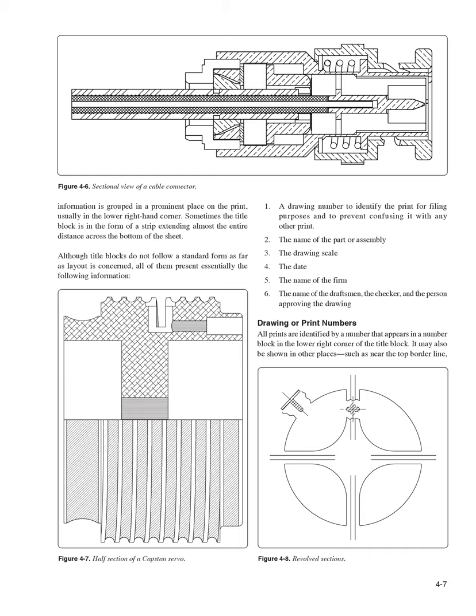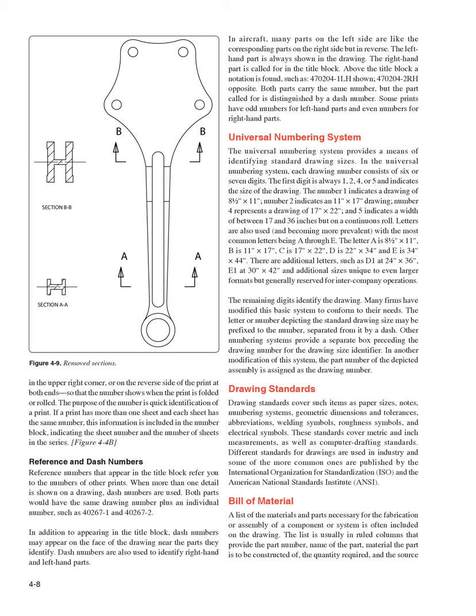All prints are identified by a number appearing in a number block in the lower right corner of the title block. It may also appear near the top border line, in the upper right corner, or on the reverse side of the print at both ends, so the number shows when the print is folded or rolled. The purpose of the number is quick identification. If a print has more than one sheet with the same number, the sheet number and total sheets in the series are included in the number block.